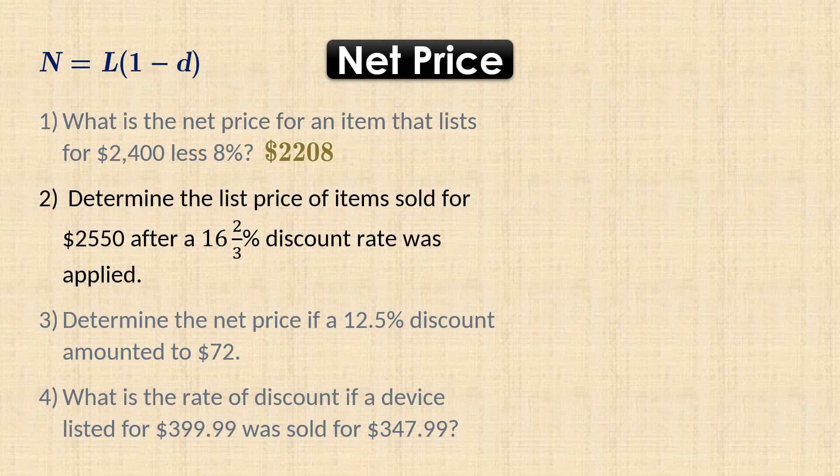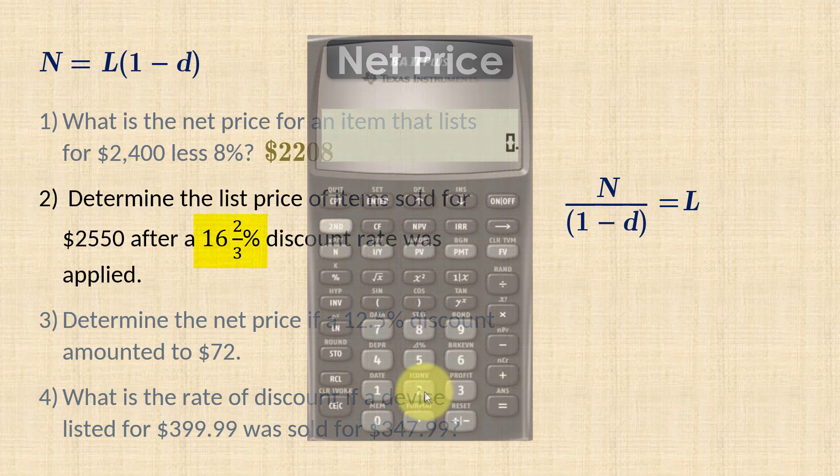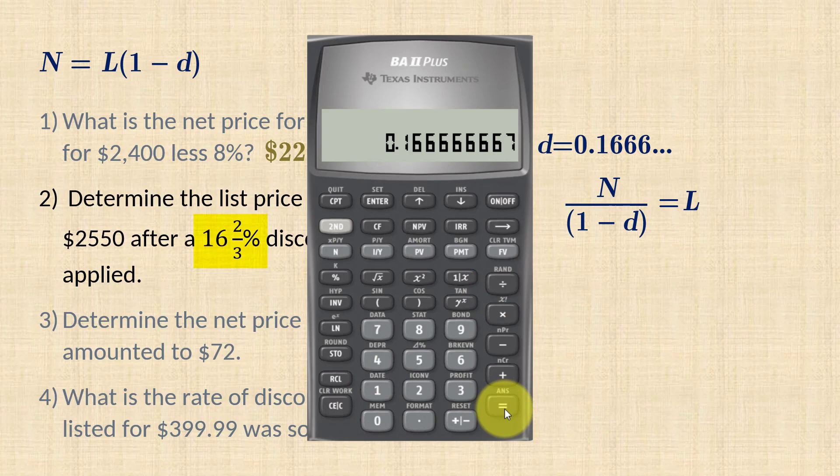In number 2, we want to calculate the list price given the rate of discount is 16 and 2/3%. To convert that to decimal, we first divide 2 by 3 to get 0.66 repeating. We then add 16 to that and divide by 100. So the rate of discount is 0.166 repeating.